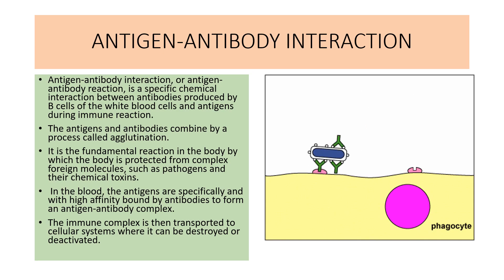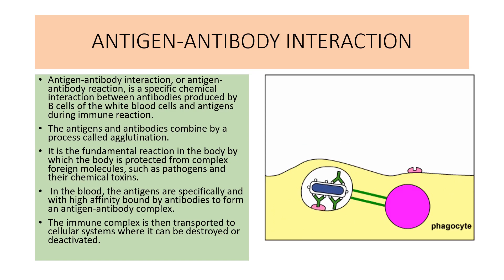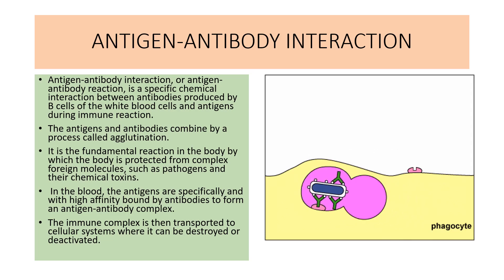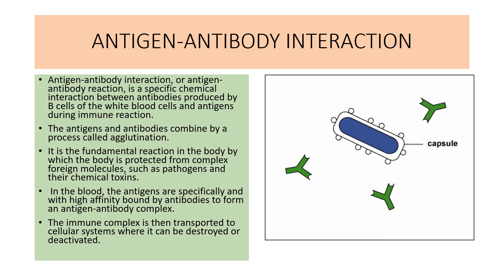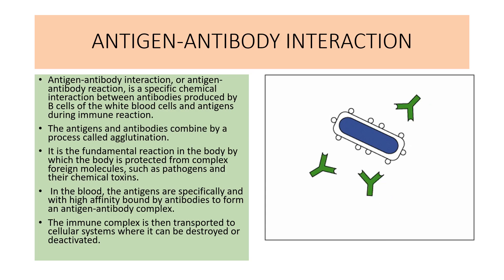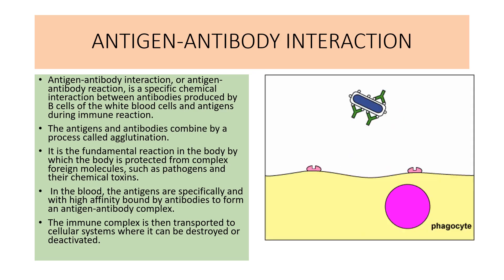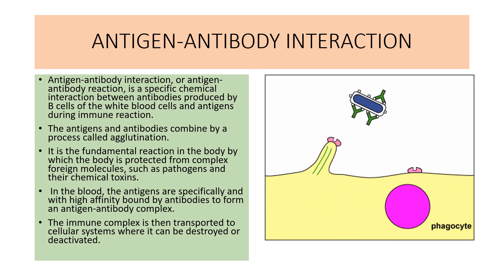Antigen-antibody interaction is a specific chemical interaction between antibodies produced by the B cells of WBC and antigens during the immune response. The antigen and antibody combine by the process called agglutination. It is the fundamental reaction in the body by which the body is protected from complex foreign molecules such as pathogens and their chemical toxins. In the blood, antigens are specifically and with high affinity bound by antibodies to form an antigen-antibody complex. The immune complex is then transported to the cellular system where it can be destroyed or deactivated.